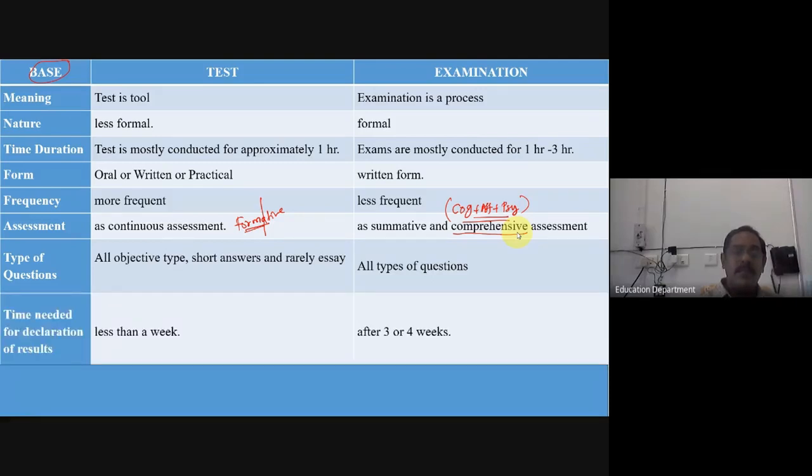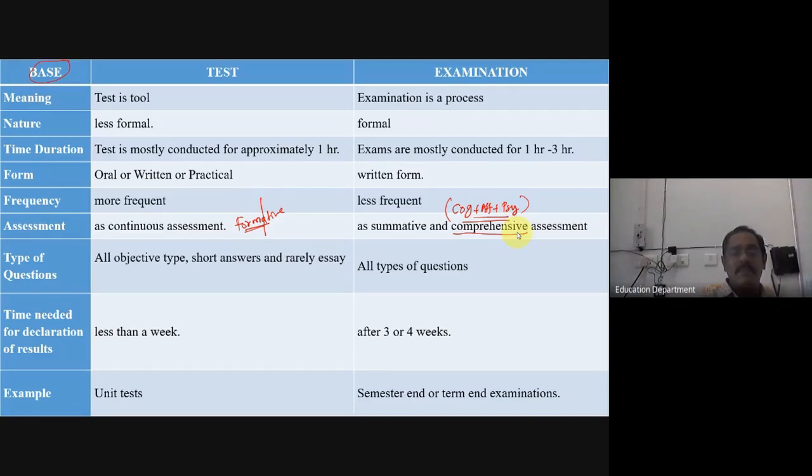Time needed for results: tests, we can tell next day itself. If a teacher puts in Google form and you're answering, if it is one word you will get it then and there itself. Suppose if I put some Google form question on this assessment and learning or today's class, you will get the results at that time itself if it is objective type questions. But examination will take normally a month. Your semester examination, you will be getting your grades normally within a month.